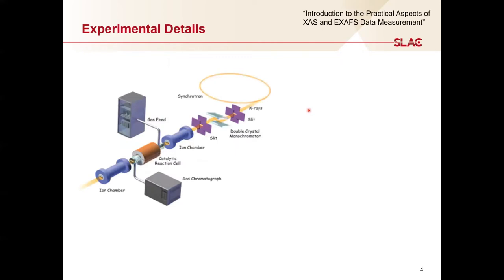We'll start by going over the details that should be included in the methods section of your paper. It's important to provide enough details for readers to be able to understand your results, reproduce your experiments, and compare your results with their own data. You can think of this and the following slide as a checklist of details that should be present in your methods section.